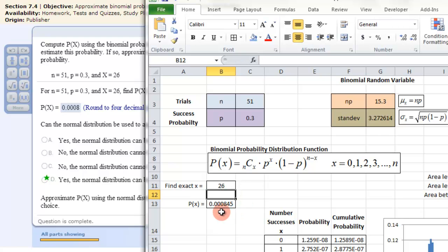It will give me my exact probability, 0.0008. And that's exactly what it is. I've already created this Excel document before. I just insert the information. This is showing the binomial probability of this random variable.